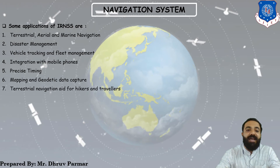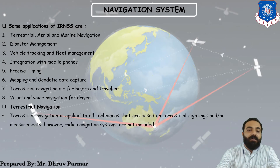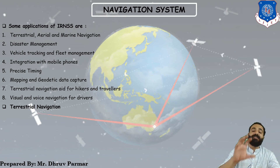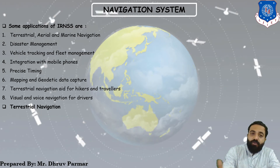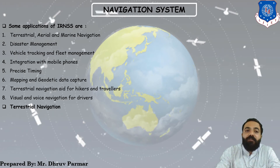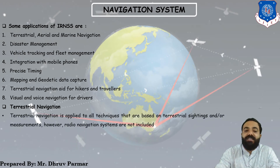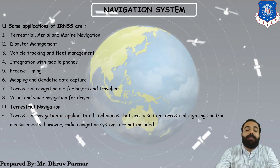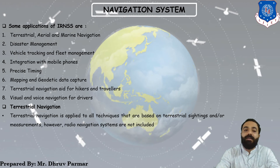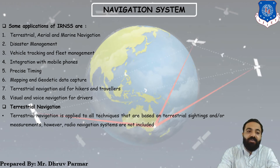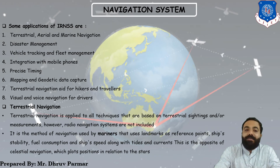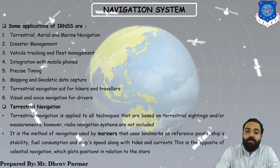Terrestrial navigation is applied to all techniques based on terrestrial siting and measurement. Radio navigation systems are not included in this category. It is used by mariners, who use landmarks as reference points. Instruments for distance measurement include laser range time-of-arrival pulses, continuous waves, and RF techniques such as radar time-of-arrival pulses and continuous waves.